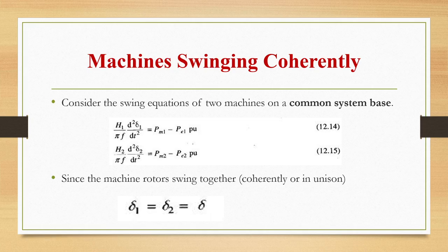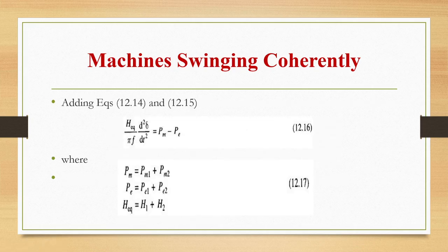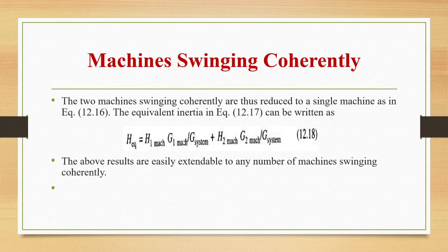For two machines on a common base, the swing equations are: H1/(πf)·d²δ1/dt² = Pm1 − Pe1 and H2/(πf)·d²δ2/dt² = Pm2 − Pe2 (both in per unit). Since machines swinging in unison have δ1 = δ2 = δ, adding the two equations gives H_eq/(πf)·d²δ/dt² = Pm − Pe, where Pm = Pm1 + Pm2, Pe = Pe1 + Pe2, and H_eq = H1 + H2. Two coherently swinging machines are thus reduced to a single equivalent machine. This result extends to any number of coherently swinging machines.